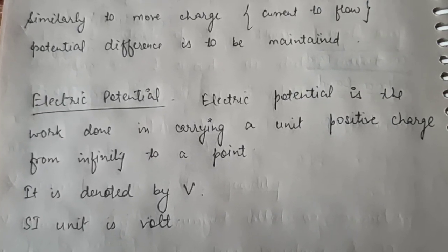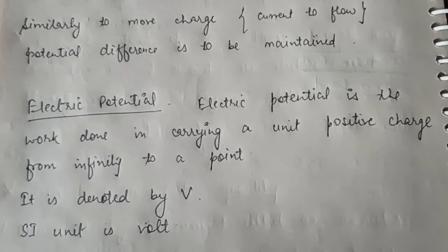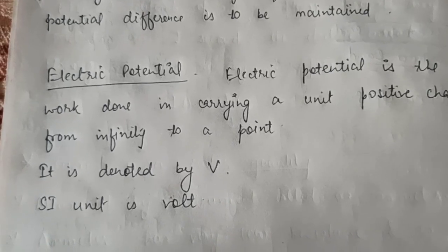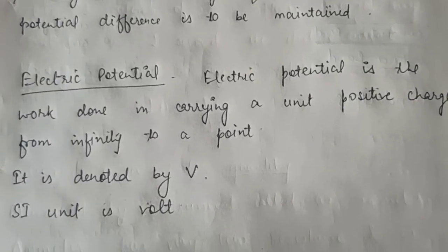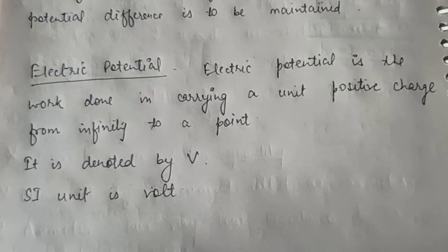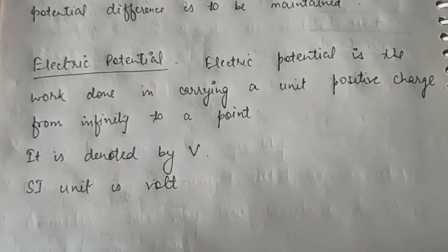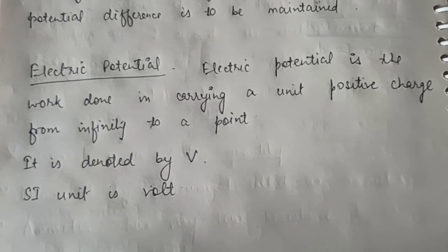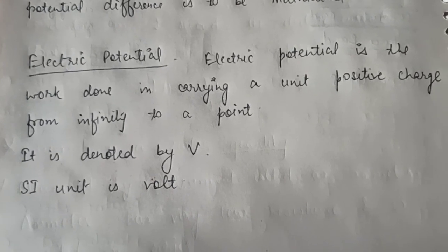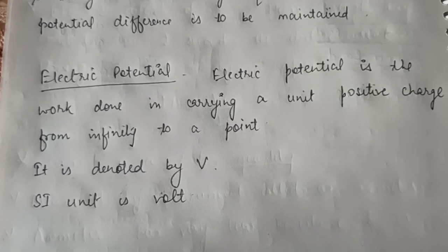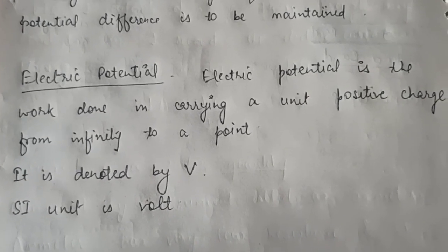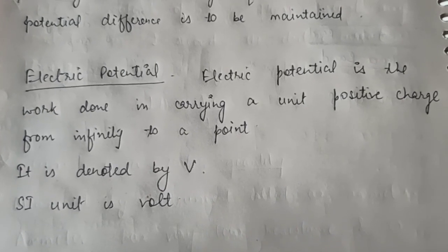What is electric potential? It is the work done in carrying a unit positive charge from infinity to a point inside an electric field, denoted by V, with unit volts. Now, charges either repel or attract each other. If we take two positive charges and want to move one towards the other, we have to put in work because they repel. Every charge has an electric field around it, and the work done is stored as potential energy.